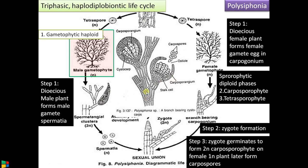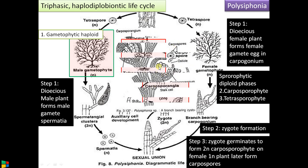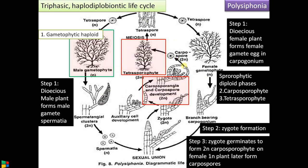Zooming in: on the female gametophytic plant, a fruiting-body-like structure called the cystocarp is formed. Inside it there is the carposporangium, on which diploid carpospores are formed. Since the zygote is diploid, carpospores are formed by mitosis and are also diploid. On maturity, this carposporophyte — which is dependent on the female gametophyte — releases the diploid carpospores.